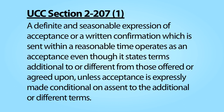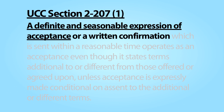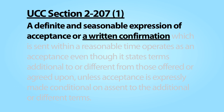Subpart 1 allows an offeree's acceptance to create a valid contract despite the fact that the offeree's acceptance contains terms that are not the mirror-image of the offer. This subpart applies to two different situations. First, it applies in instances where there has been a definite and seasonable expression of acceptance. Second, it applies to instances involving a written confirmation. The first clause deals with cases in which the parties exchange writings. The second clause deals with cases in which the parties have already entered into an oral agreement and one or both parties follow up with a document that purports to memorialize the terms of that agreement.